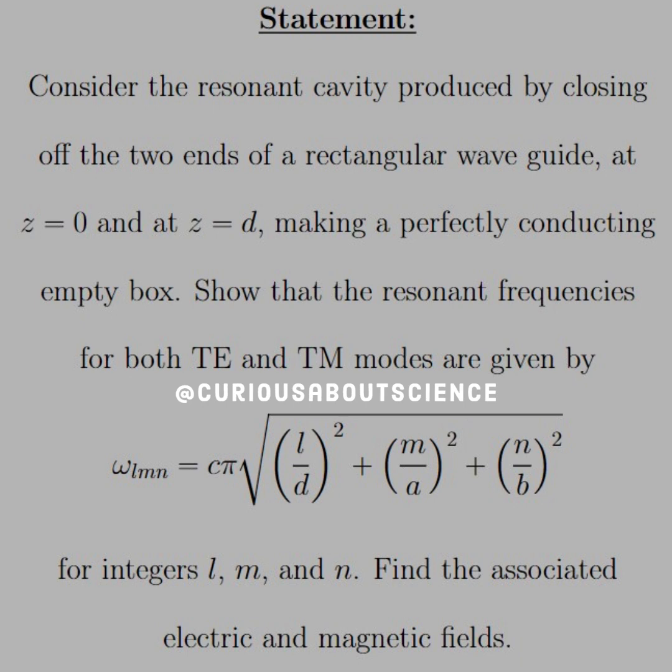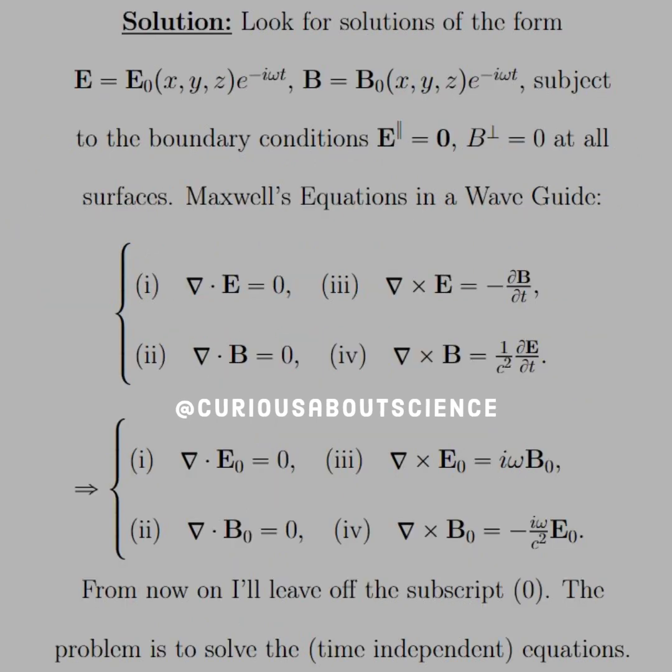So we talked about waveguides earlier. Now what happens when we have a resonant cavity, which is produced by closing off two ends of a rectangular waveguide? We closed them off at z equals zero and z equals d, making a perfectly conducting empty box. Show that the resonant frequencies for both TE (transverse electric) and transverse magnetic modes are given by omega LMN equals C pi square root of L over D squared plus M over A squared plus N over B whole thing squared, for integers L, M, and N, finding associated electric and magnetic fields.